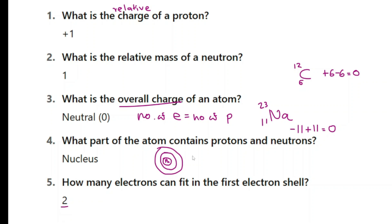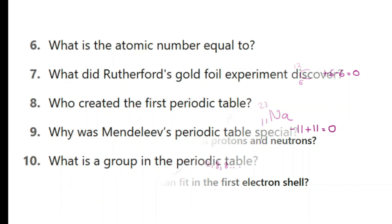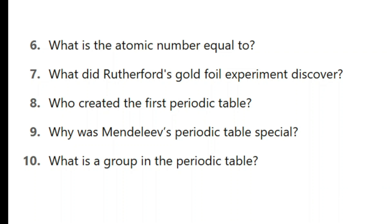How many electrons can fit in the first shell? It will be two — actually a maximum of two. You can have one or two electrons in the first shell. If there are more than two electrons, they will go to the next one. So the first shell can have two, the next one can go up to eight, the next one can go up to eight, and so on.